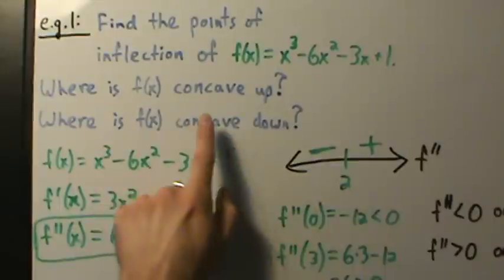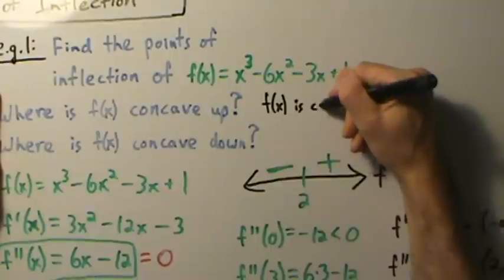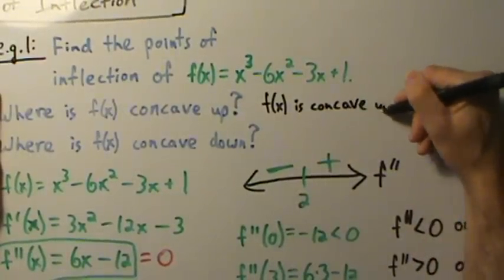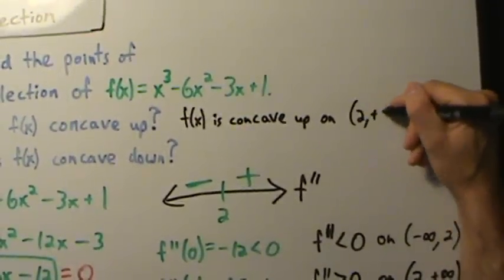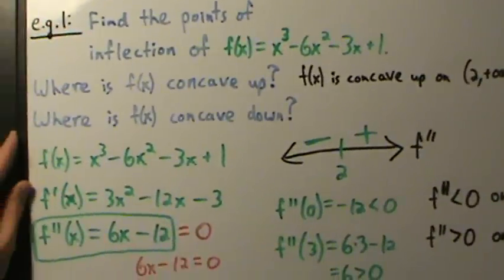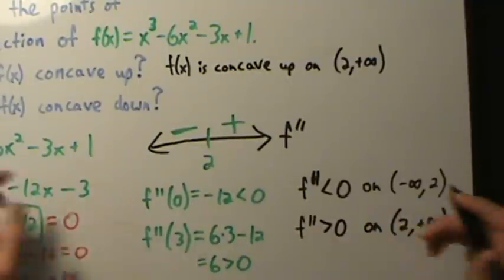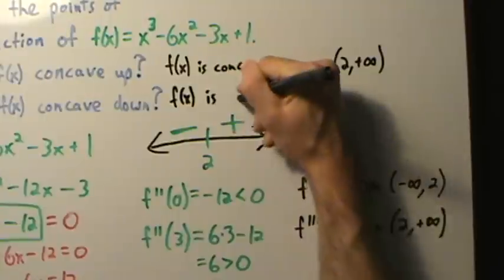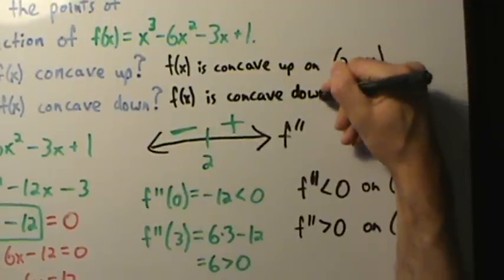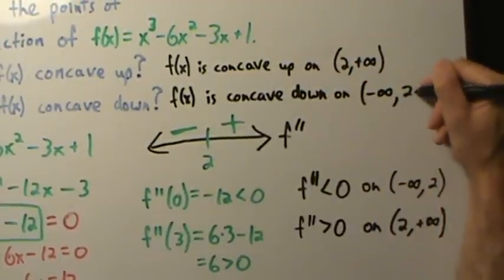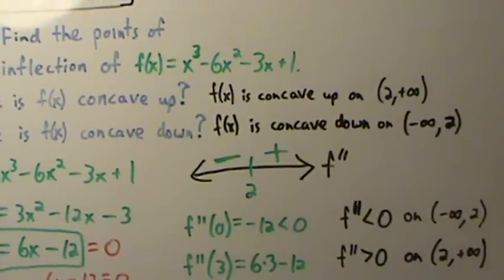We can now answer the concavity questions. f(x) is concave up on (2, ∞), and f(x) is concave down on (-∞, 2). That takes care of two of the three things we need to figure out.